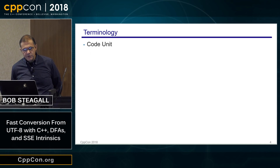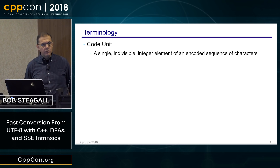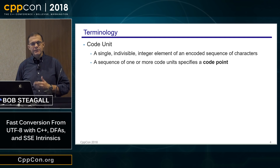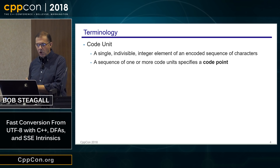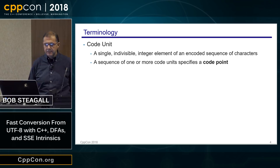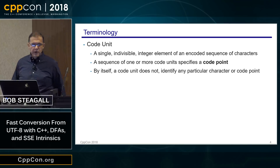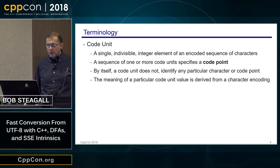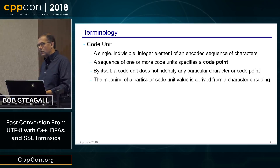A code unit is a single, indivisible integer element of an encoded sequence of characters. A sequence of code units specifies a code point. You can think of code units as being atoms and a code point as being a molecule — it's the molecules that represent characters. By itself, a code unit really doesn't have any meaning; it doesn't identify any particular character or code point. The meaning of a code unit is derived from the encoding it is intended to represent.